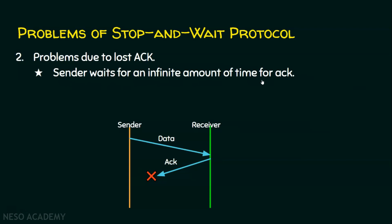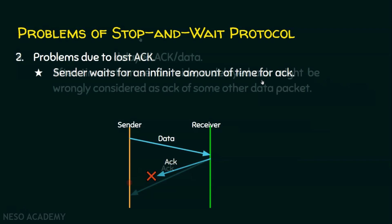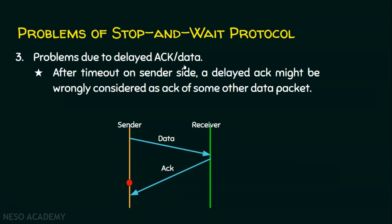The third problem is due to delayed acknowledgement or delayed data. The sender sends the data, and a timeout occurs on the sender side. Until the timeout, there is no chance for the acknowledgement to be received by the sender. However, the receiver has sent the acknowledgement, and it arrives very late — after the timeout. There are chances for the sender to wrongly consider this delayed acknowledgement as the acknowledgement of some other data packet.